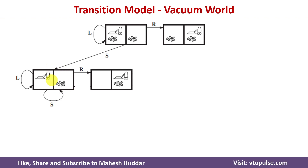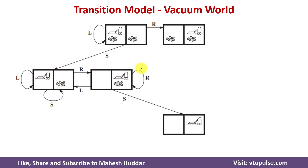For this state we have applied all three actions and this is how the updated transition model looks. Now we consider the next state where the agent is in location B. When we apply the Left action, the AI agent moves from location B to location A. When we apply Right, it remains in the same state because the AI agent is already in the right location. When we perform Suck — since location B is dirty and the AI agent is present there — the dirtiness is sucked and location B becomes clean.